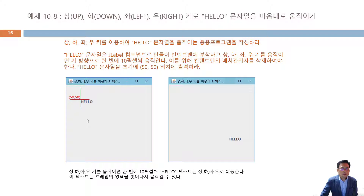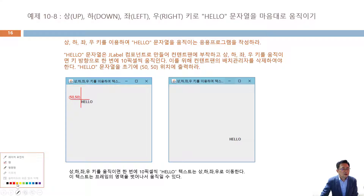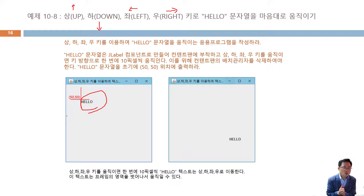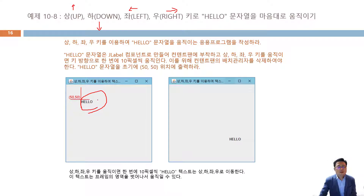오늘 실습할 것은 키보드의 하이라이트라고 볼 수 있는데, 키보드 방향키—위, 아래, 왼쪽, 오른쪽—가 있잖습니까. 화면에 'Hello'라는 글자가 있으면 방향키를 한 번 누를 때마다 그 방향으로 10씩 이동하는 것을 KeyListener를 사용해서 만드는 것이 되겠습니다.